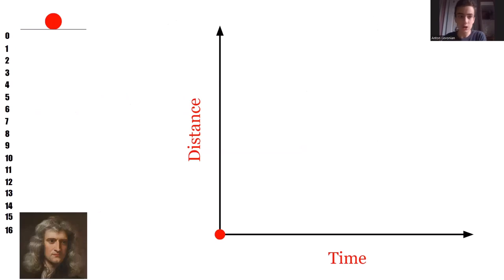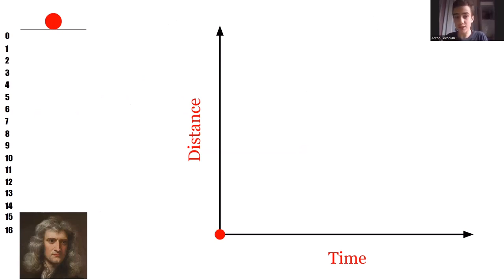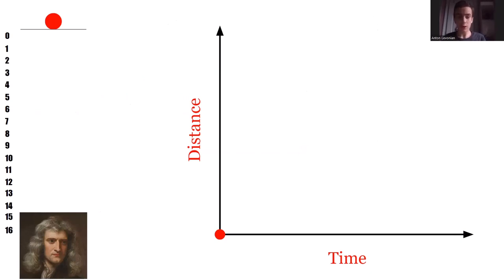We will start with a brief intro into how calculus was first developed. When you think of the development of calculus, you think of Isaac Newton, who was a British mathematician and physicist, and Leibniz, who was German. They both discovered and formalized calculus at approximately the same time. Newton is most famous probably for his study of gravity — he was the first to observe a gravitational force.